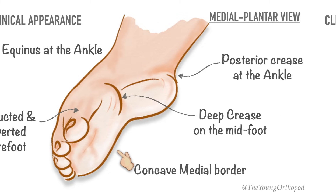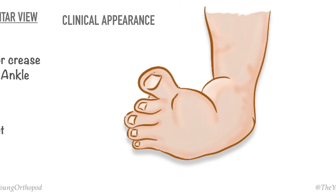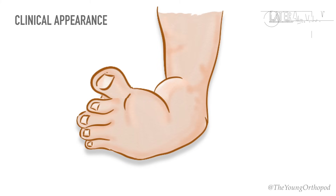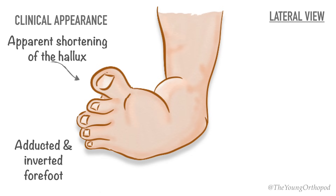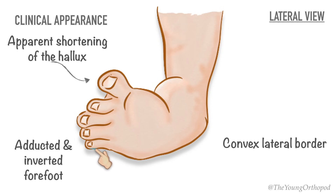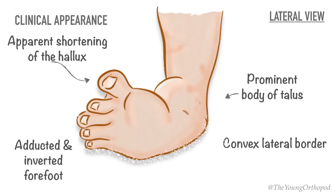On examination from the lateral side, one can again note the forefoot is adducted and inverted. There is apparent shortening of the great toe, a convex lateral border of the foot, and a prominent body of the talus on the dorsolateral aspect of the foot.